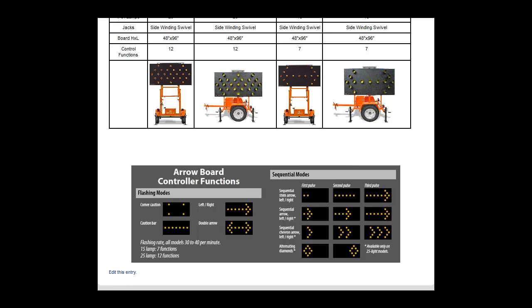With a 25-lamp or 12-function controller, an aero board can perform all of the 15-lamp functions, plus sequential aero left or right, sequential chevron aero left or right, and alternating diamonds.